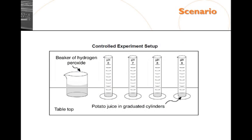This is a picture of the setup, where you have gradients of pH from pH 6 on the low end to pH of 9 on the high end. You have potato juice added to the graduated cylinders. And then you have the substrate hydrogen peroxide being added.